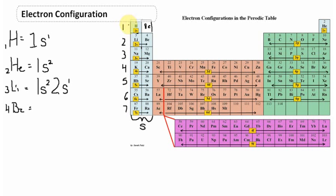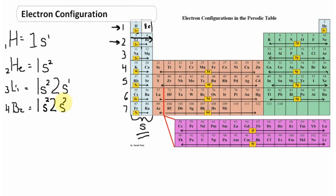Element number four is beryllium, with four electrons placed closest to the nucleus. We fill the first energy level: the only orbital that exists there is the s orbital, which holds two electrons — 1s2. On the second energy level, the first place to put an electron is the s orbital again, which can hold two. So beryllium fills 1s2 and 2s2. There's no more room in the 2s orbital; the next electrons will go into the p orbitals.